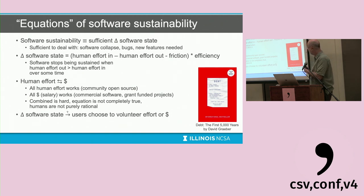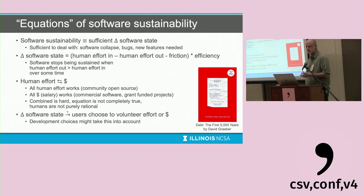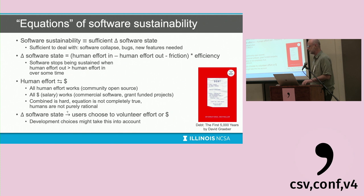One more idea: it's possible to think of a change in software state as implying whether users will choose to volunteer effort or money later. Development choices might take this into account — not just what features users want, but whether a choice will make the project more sustainable by making people more willing to contribute, pay for it, or volunteer. This is an idea that projects don't often act on, but maybe should.